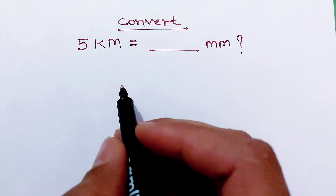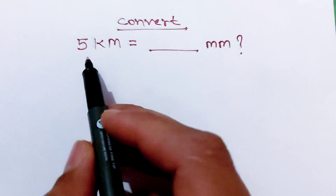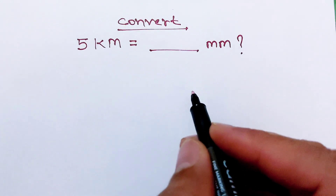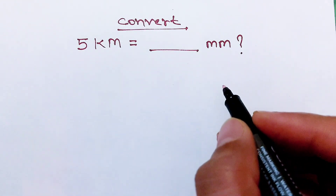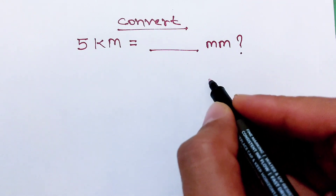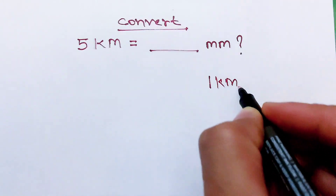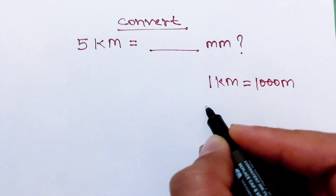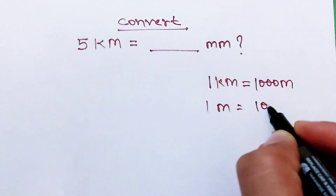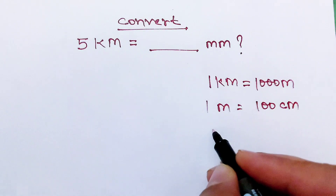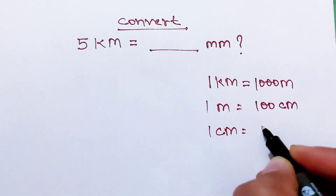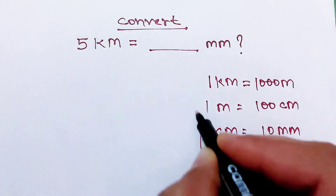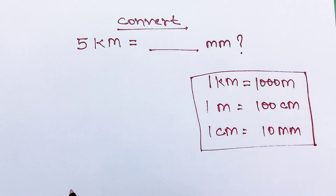Hello, the question is we have to convert 5 kilometers into millimeters. Before solving this question, we should know these values: 1 kilometer is equal to 1000 meters, 1 meter is equal to 100 centimeters, and 1 centimeter is equal to 10 millimeters. We are using these values in solving this question.